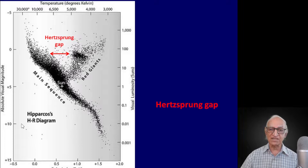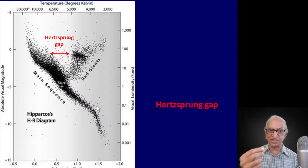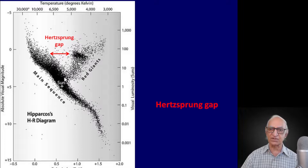Now, what has this got to do with what we observe? Let us look at this Hertzsprung-Russell diagram which has been populated with a million stars observed by the Hipparcos satellite. The Hipparcos satellite was launched to measure accurately the distances to more than a million stars and it did. Once you know the distance, you know the luminosity precisely from the inverse square law, and the surface temperature you measure spectroscopically. This is the giant branch which we discussed in the last lecture.